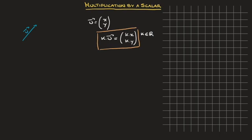What I really want to focus on right now is how multiplying a vector by a number, like k, affects it graphically. So I've got this blue vector u here, and let's see what happens to it if we were to multiply it by 2. The vector 2u is a new vector which runs parallel to the vector u and is 2 times longer. Furthermore, since 2 is a positive number, it will point in the same direction as u.